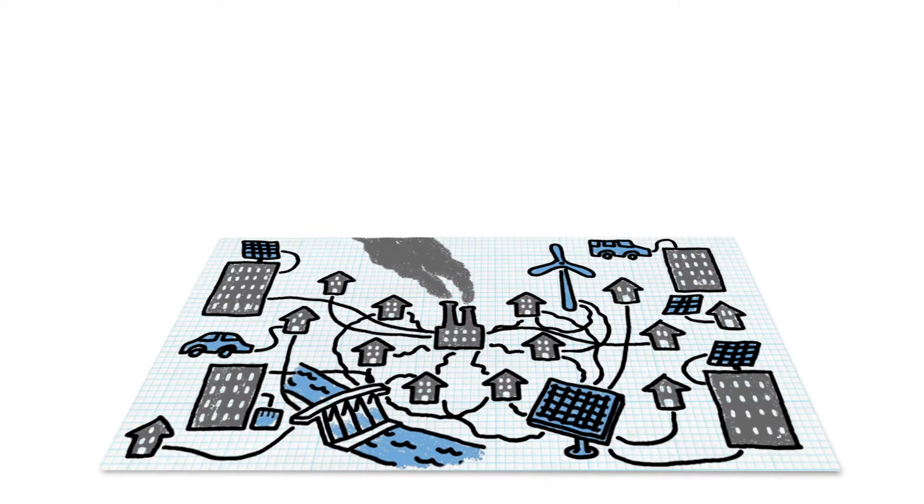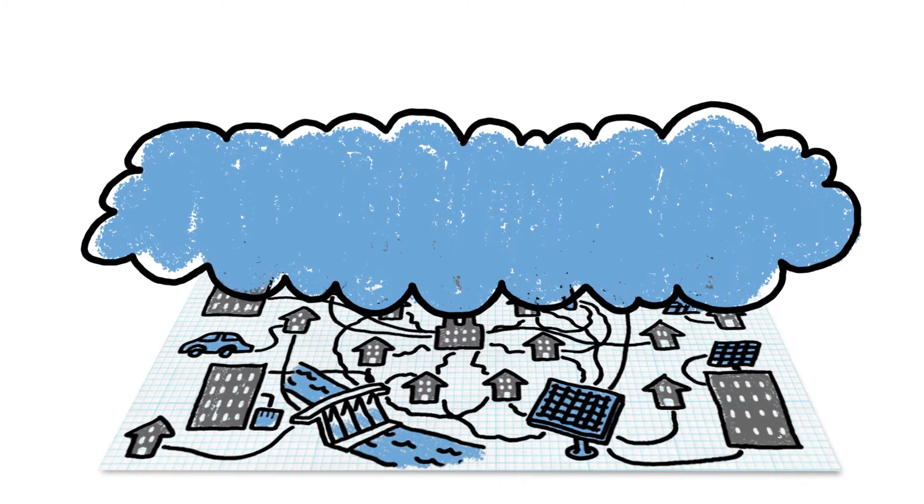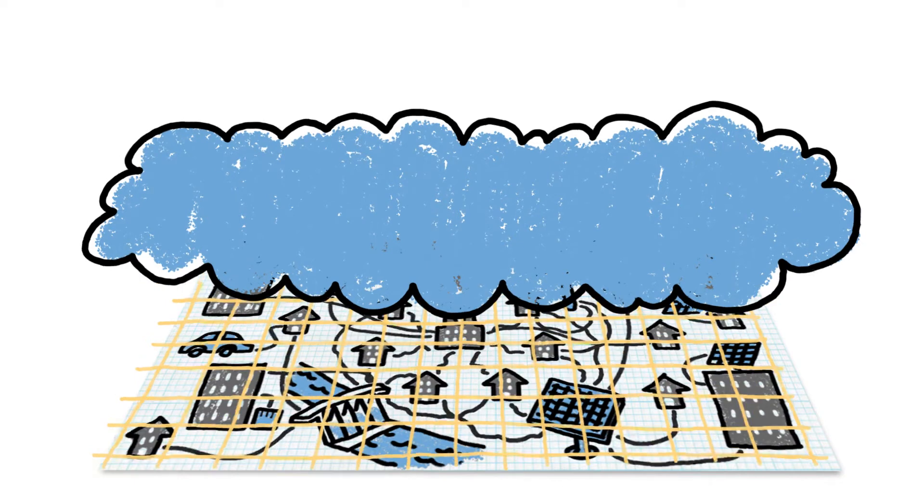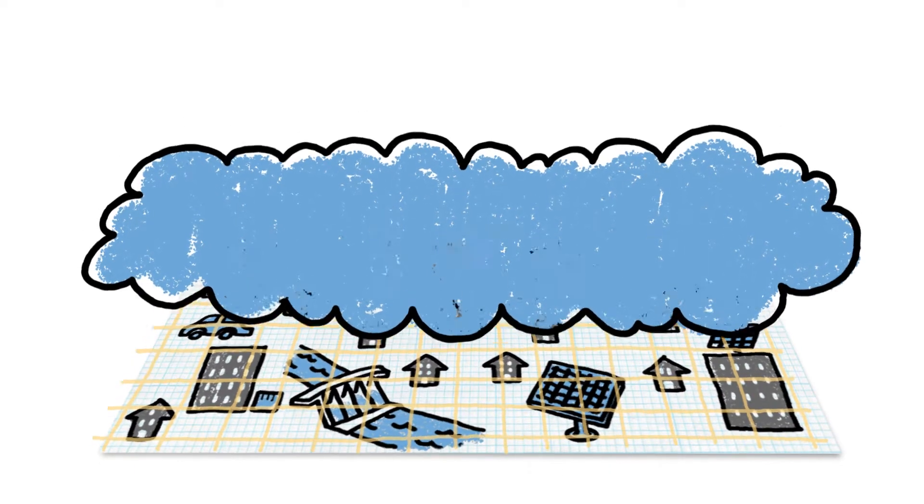But rather than start from scratch, a layer of software can be created over the top of the traditional infrastructure to help utilities create a better grid. This new system is known as a smart grid.